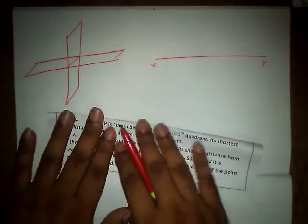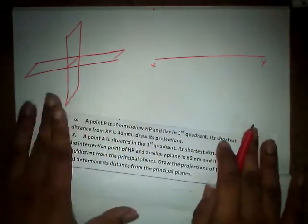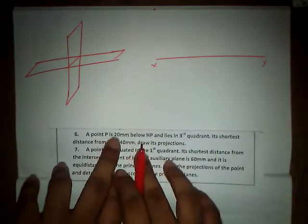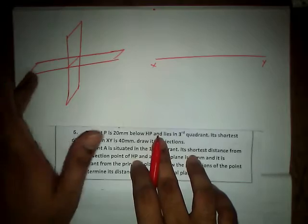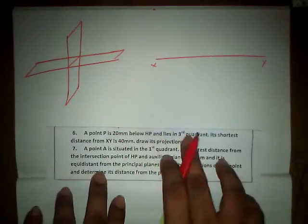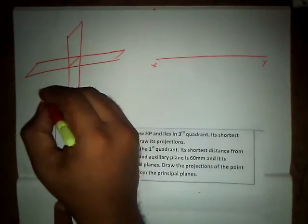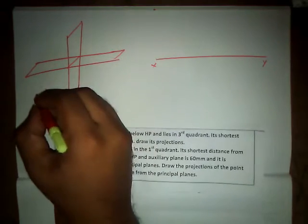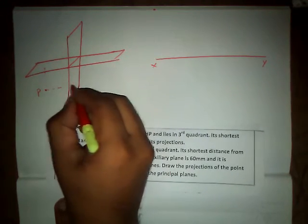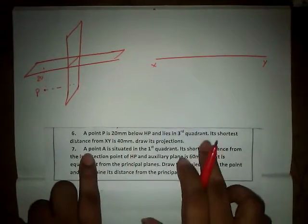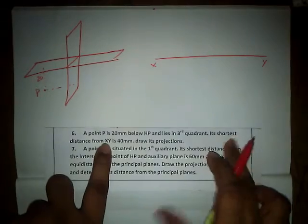As per the question, point P is 20mm below HP. So below HP in the sense it can be anywhere over here, and we directly said it lies in third quadrant. So point capital P lies in third quadrant and below is 20mm and its shortest distance from XY line.